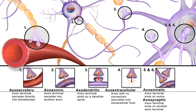Gabor, Pribram and others noted the similarities between these brain processes and the storage of information in a hologram, which can also be analyzed with a Fourier transform. In a hologram, any part of the hologram with sufficient size contains the whole of the stored information. In this theory, a piece of a long-term memory is similarly distributed over a dendritic arbor so that each part of the dendritic network contains all the information stored over the entire network.